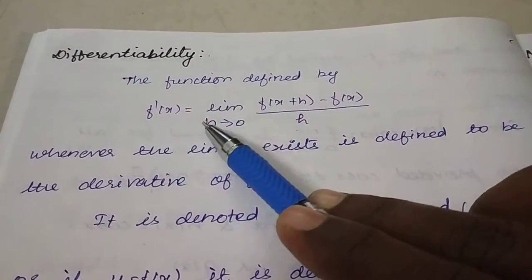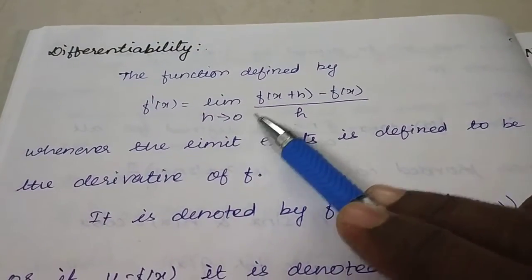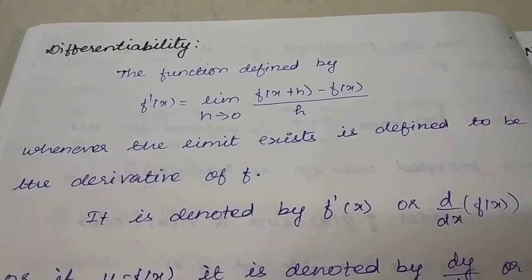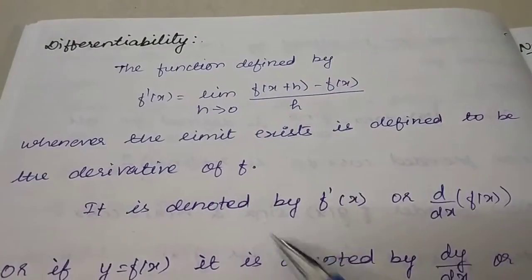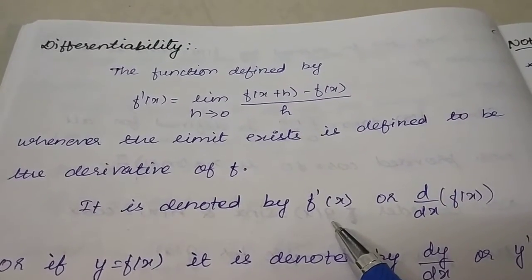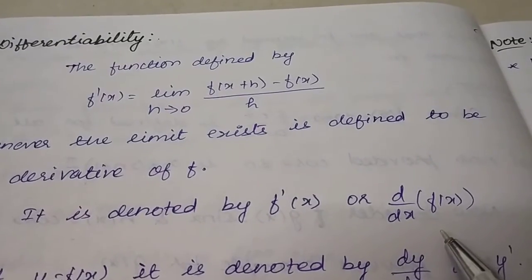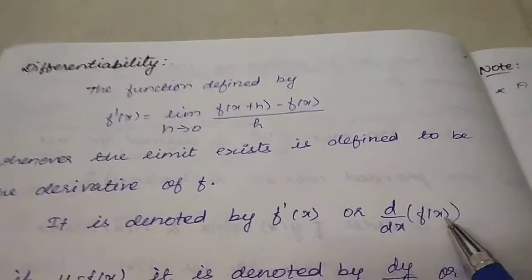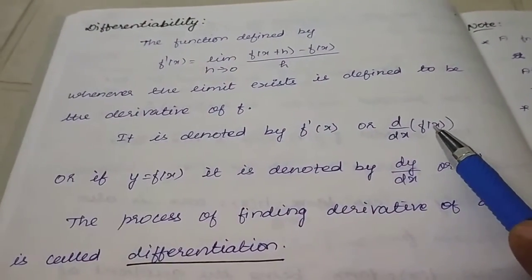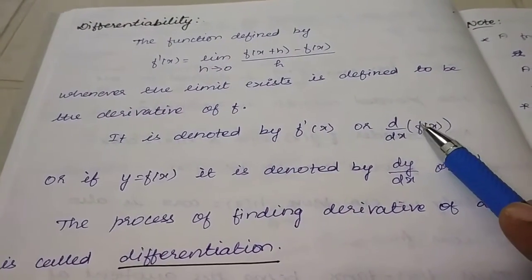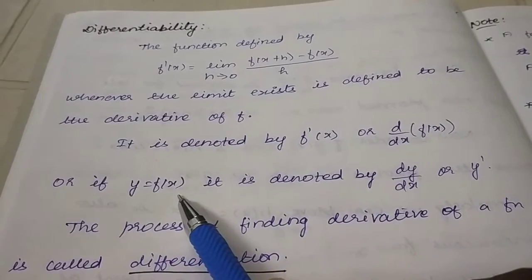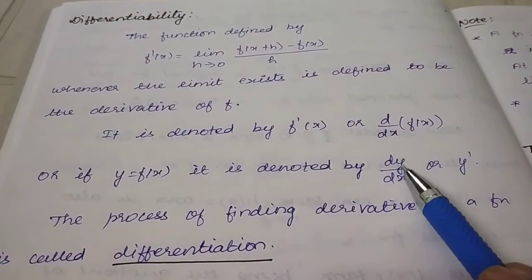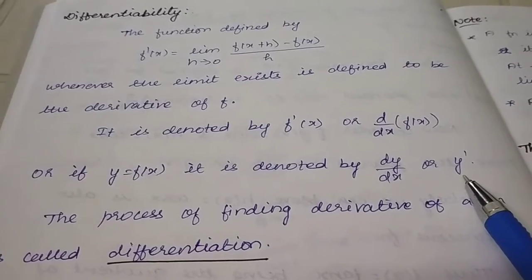So f'(x) equals the limit as h tending to 0 of f(x+h) minus f(x) by h. Here we use the notation f'(x), or alternatively d/dx of f(x). If we take y as f(x), then we can write this as dy/dx, or simply y'.